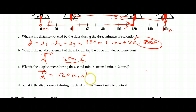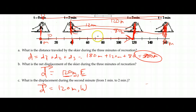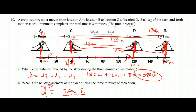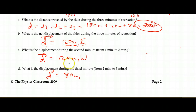Finally, what's the displacement during the third minute — from two minutes to three minutes? At two minutes I was at 40, and at three minutes I'm at 120. That's 80 meters. But for displacement, I need three parts: 80 is the value, meters is the unit, and the direction — I started here and ended to the right of where I was, so the displacement is 80 meters east.